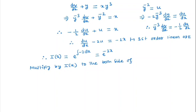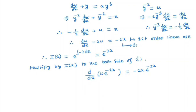In the next step, we multiply both sides of the equation by the integrating factor. We then get d/dx of [u · e^(minus 2x)] = minus 2x · e^(minus 2x).